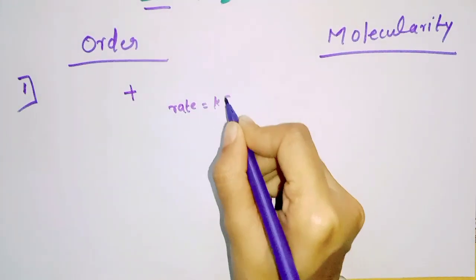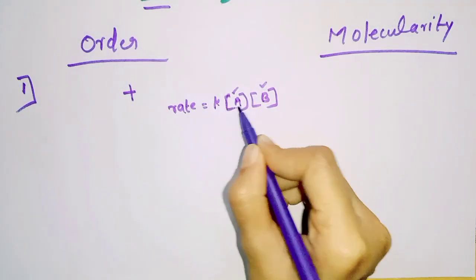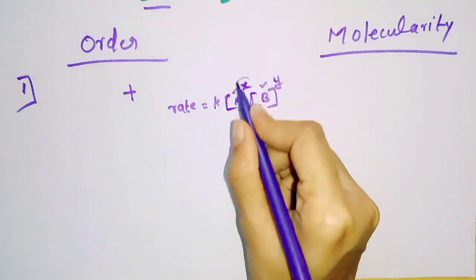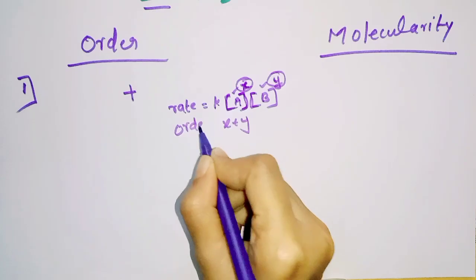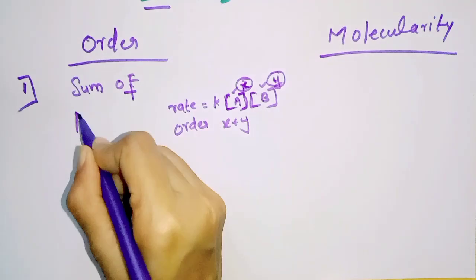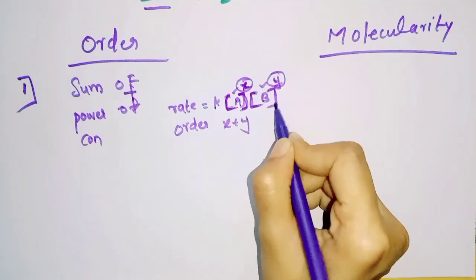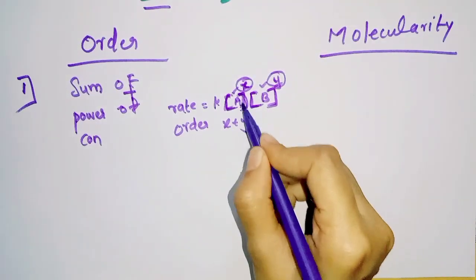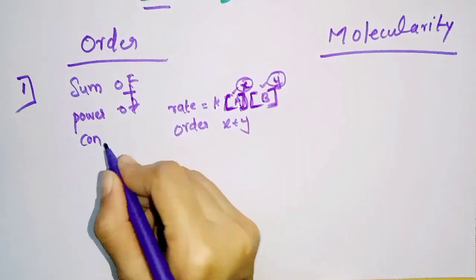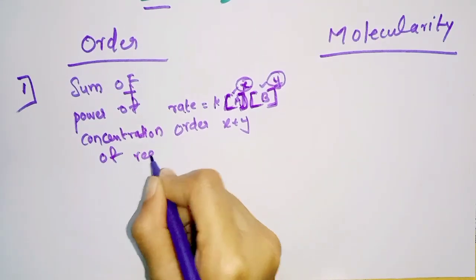The important question: what is the order? For two reactants A and B, the rate depends on concentration of A raised to power x and concentration of B raised to power y. The sum of x and y — these powers — is the order. The order is the sum of the powers of the concentration terms of reactants in the rate expression.